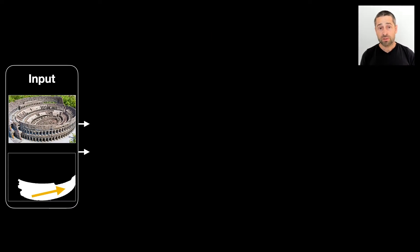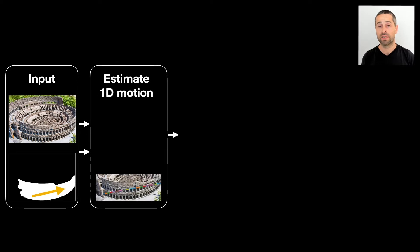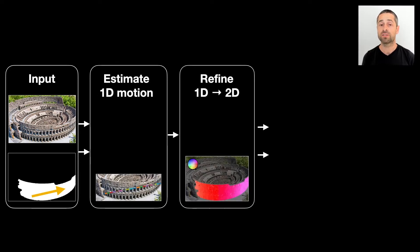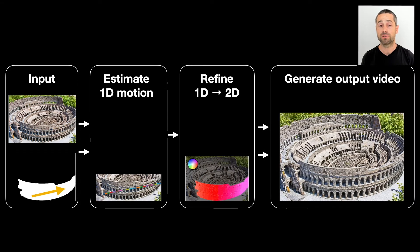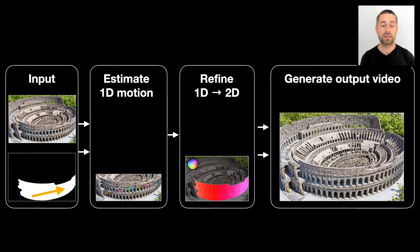So our goal was to turn cinemagraph creation into an automatic method, but it was also critical to us to keep it at interactive running times. Our key insight here was that we can first quickly estimate rough motion in 1D, and later on refine that initial estimate in 2D in order to assign a motion vector to every pixel. In that way, this setup balances accuracy and speed.